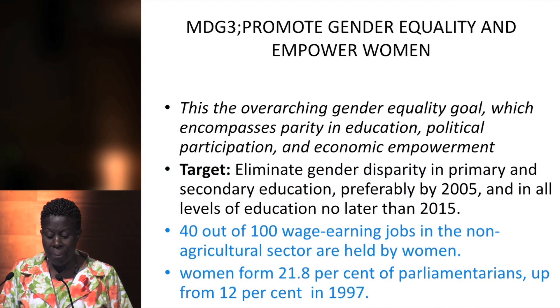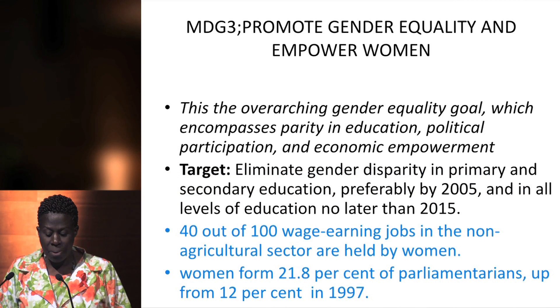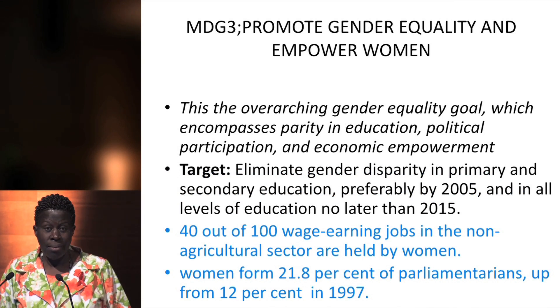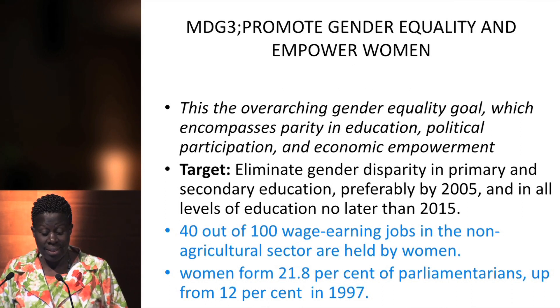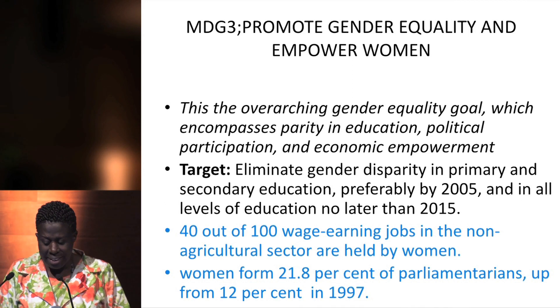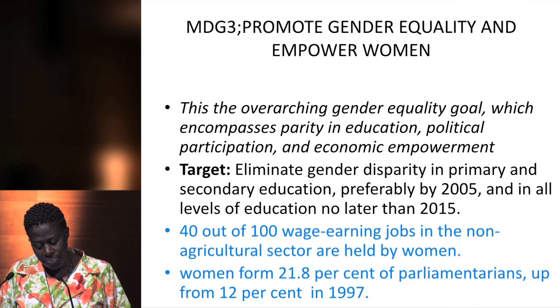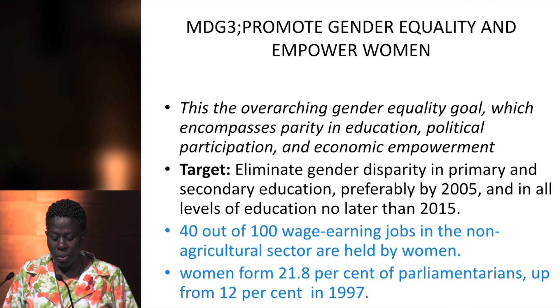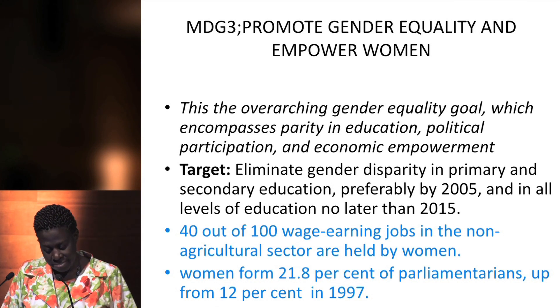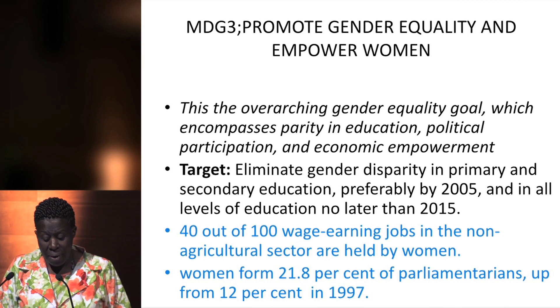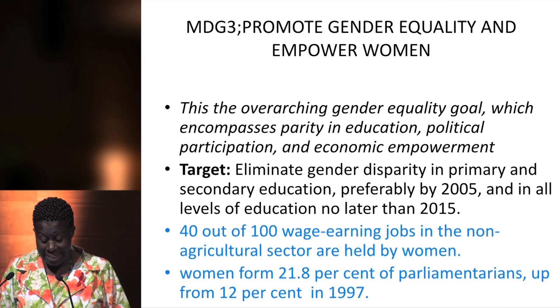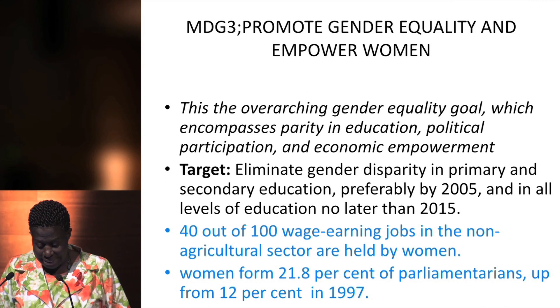MDG III was supposed to promote gender equality and empower women. This is an overarching goal encompassing parity in education, political participation, economic empowerment, and global health — which may not be achieved without gender equality. The target was to eliminate gender disparity in primary and secondary education by 2005 and at all levels of education by 2015. Currently, 40 out of 100 wage-earning jobs in the non-agricultural sector are held by women, and women form only 21.8% of parliamentarians, up from 20% in 1997.